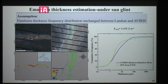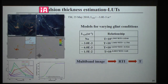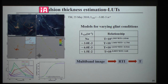Using this relationship, the oil emulsion thickness was estimated. Applying the same assumption to other Landsat images during the Deepwater Horizon oil spill under different sun glint conditions, we now have multiple models that relate RTI to thickness under varying sun glint conditions. Given a multiband image, by using RTI and looking up the models of the nearest sun glint conditions with interpolation, oil emulsion thickness can be derived.